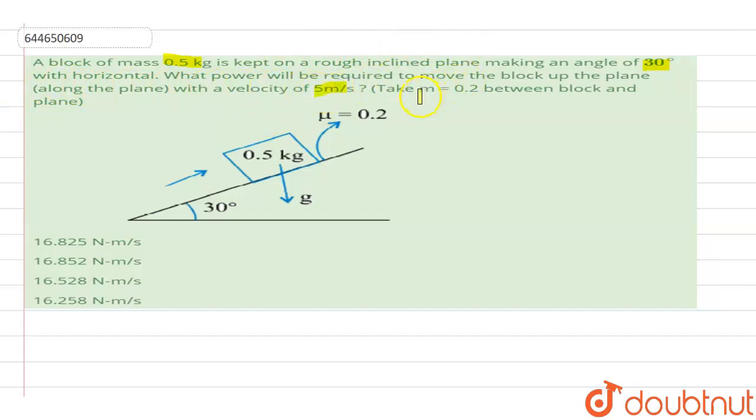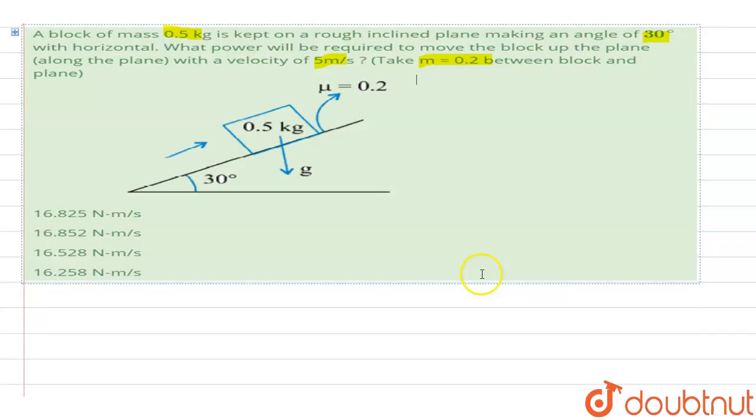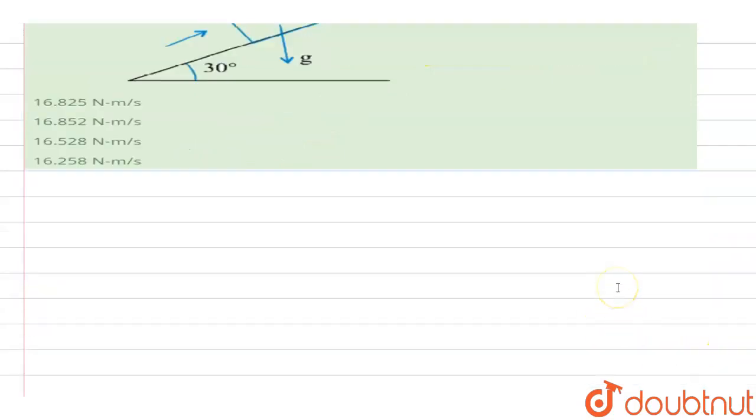The coefficient of friction mu is given to be 0.2 between block and plane. So now let's solve this question. First of all, let's draw a rough diagram.